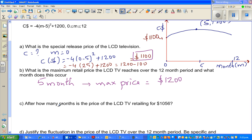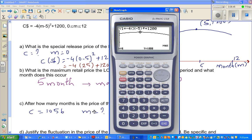Now the next question is, after how many months is the price of LCD retailing for 1056? So when C is 1056, what is M, is the question. So here again, I'll use the calculator first and then show you. So this is your graph. The question is you want to find M, which is X, when Y or your C is 1056.